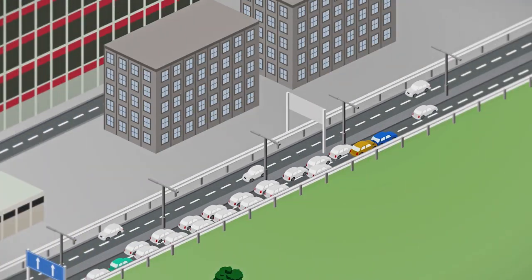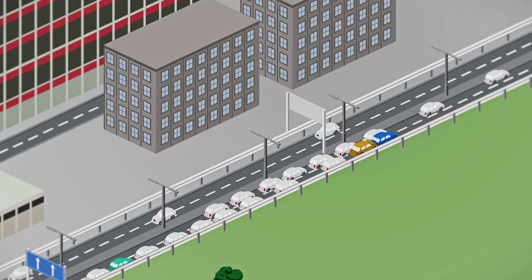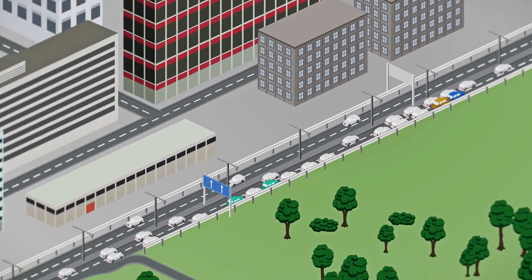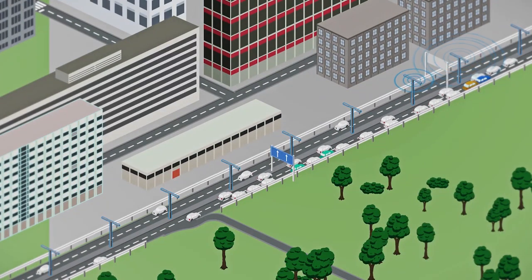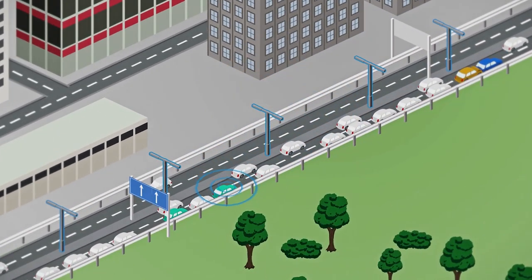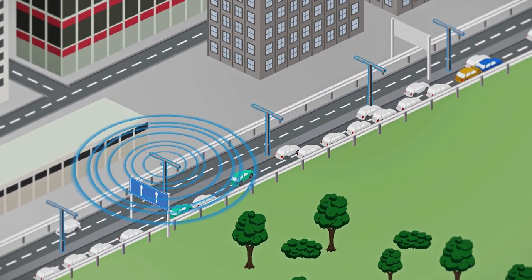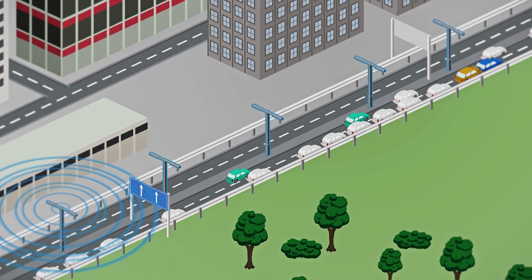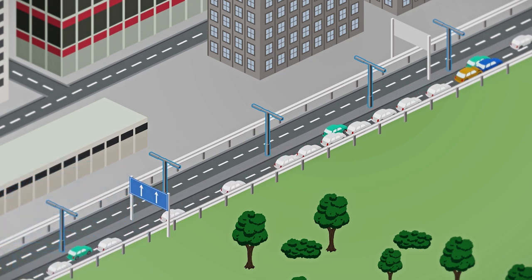In the future every communication channel will be used for immediate information transmission. Even street lighting can be used for Li-Fi. Various local information such as a traffic jam caused by a traffic accident can be transmitted via Li-Fi modules between cars and street lamps.